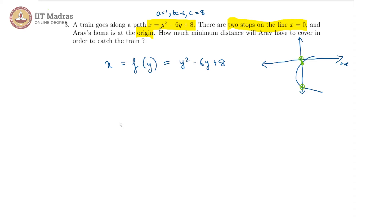Let us try to find out, let us try to plot this particular graph and let us see where the two train stops are. From the equation we know that the vertex will be minus b by 2a which is minus minus 6 by 2 that is 3.